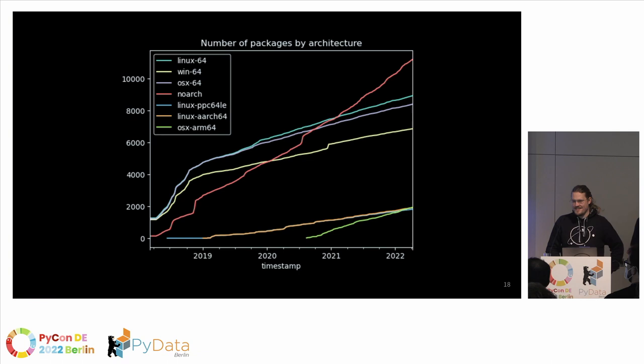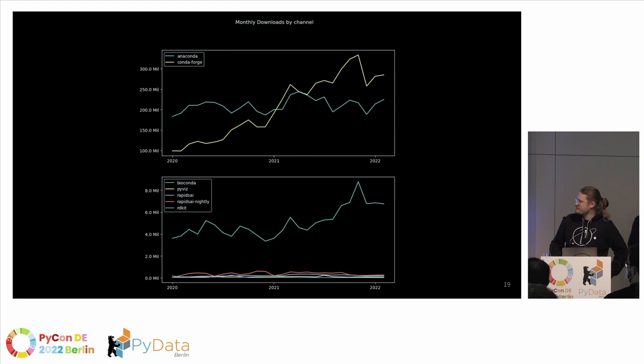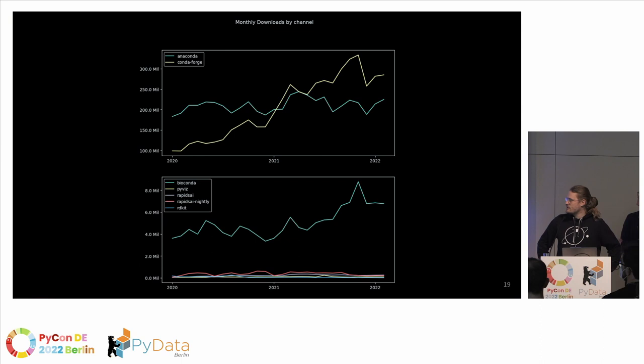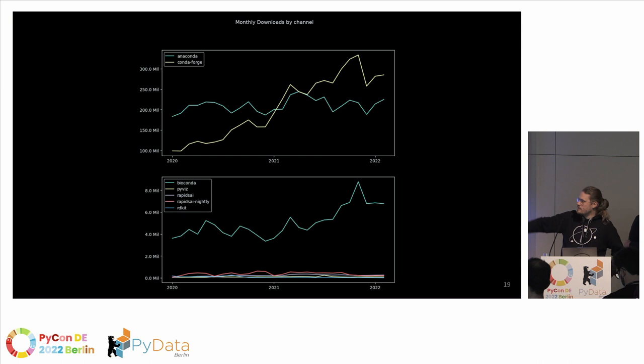Looking at downloads by channel: sometime in 2021, the CondaForge channel overtook the Anaconda defaults channel in number of downloaded packages. We peaked around 300 million downloads per month — quite a lot to handle for Anaconda's servers. BioConda is the next most popular channel with around 8 million downloads, compared to 300 million for CondaForge — quite a large difference.